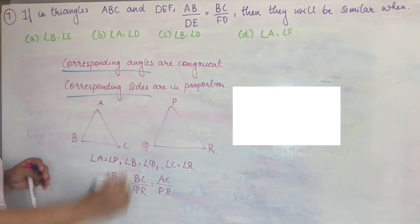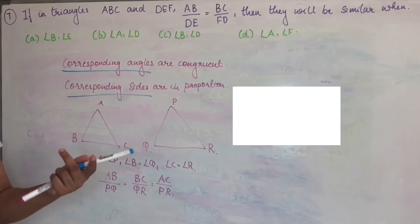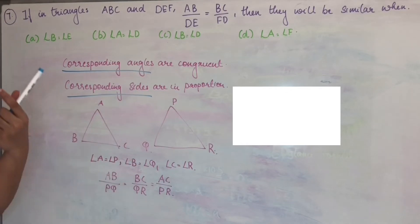Corresponding angles and corresponding sides. Next point is, to prove two triangles are similar, it is not necessary to check all the angles and all sides in order to tell whether two triangles are similar or not. Certain theorems are there, like AA similarity theorem, SAS similarity theorem,